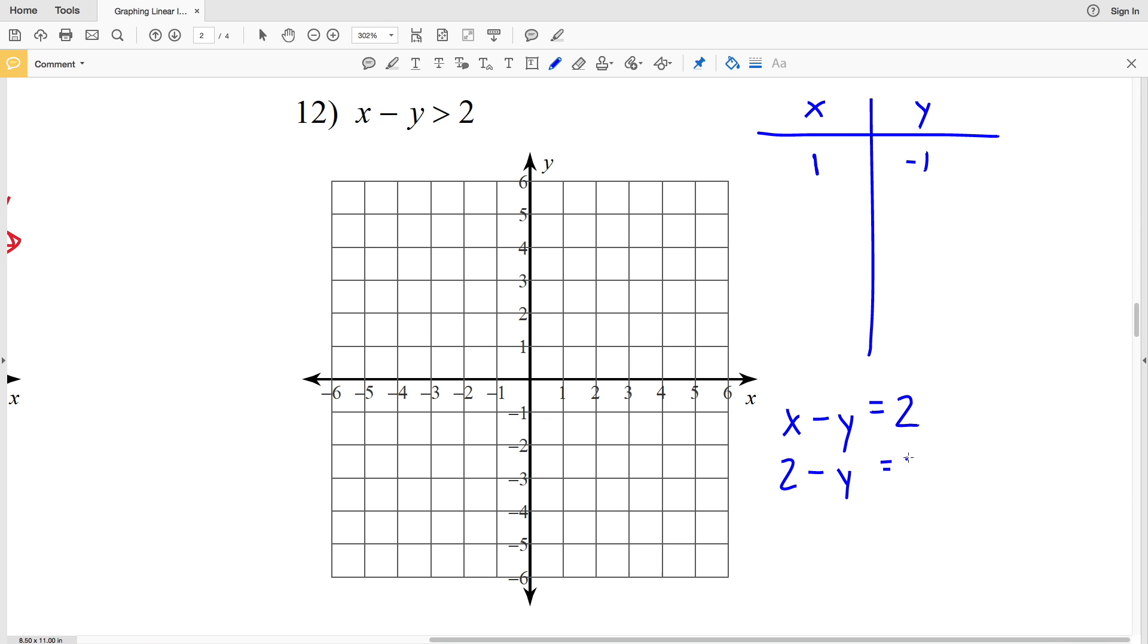Let's see what happens when X equals 2. When X is 2, we have 2 minus Y equals 2. Subtract 2 from both sides to get that negative Y equals 2 minus 2, which is 0. Multiplying or dividing by negative 1 on each side gives us that Y equals 0. So when X is 2, Y is equivalent to 0.